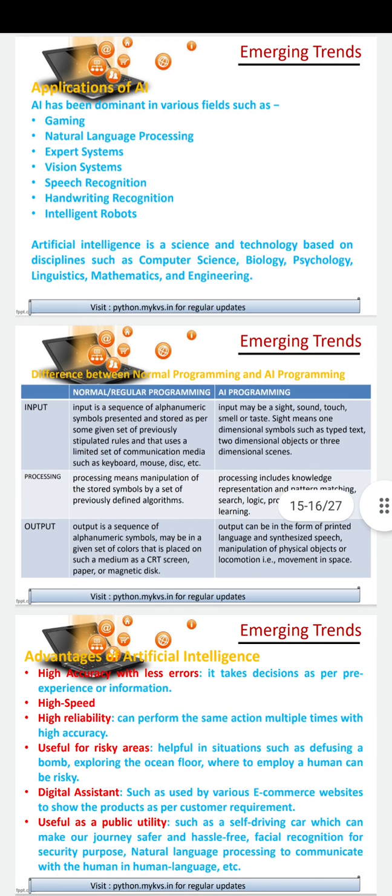Now we will see where we use artificial intelligence. Where do we apply artificial intelligence? It is used in gaming, in natural language processing, internet systems, intelligence methods, speech, intelligence systems, and intelligence robots.